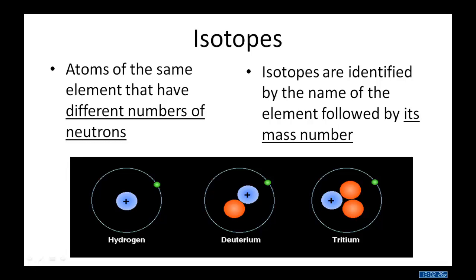Isotopes, you recall, this is our review. Isotopes, atoms of the same element that have different numbers of neutrons. Isotopes are identified by the name of the element, followed by its mass number, such as carbon-14.